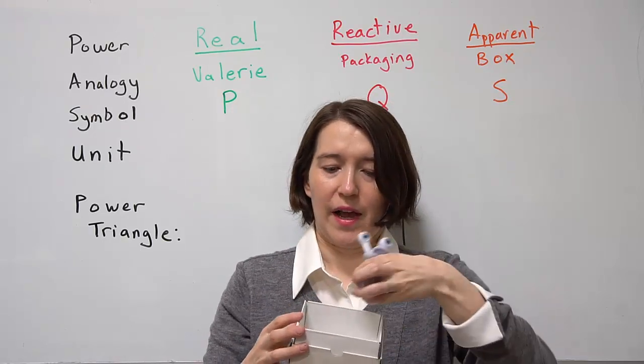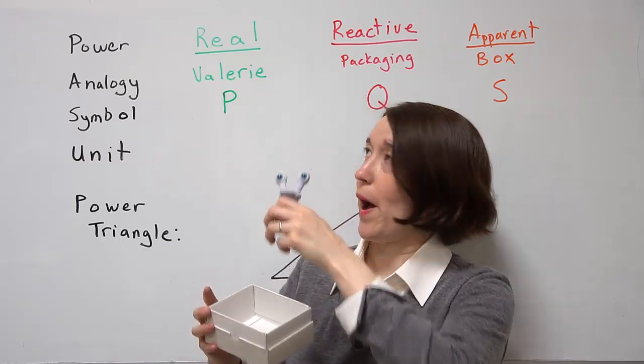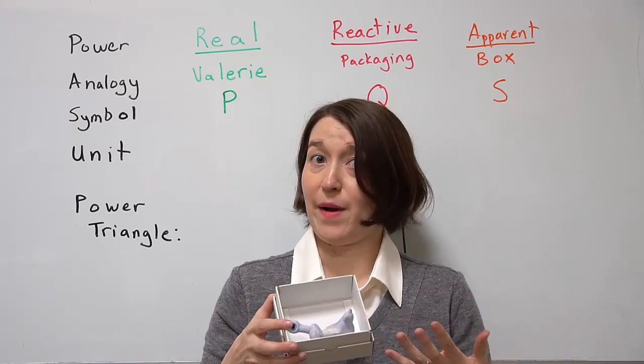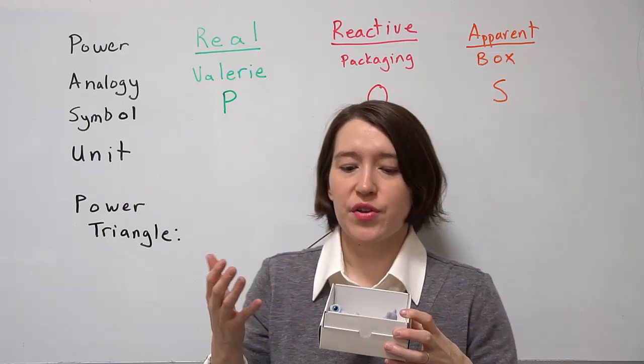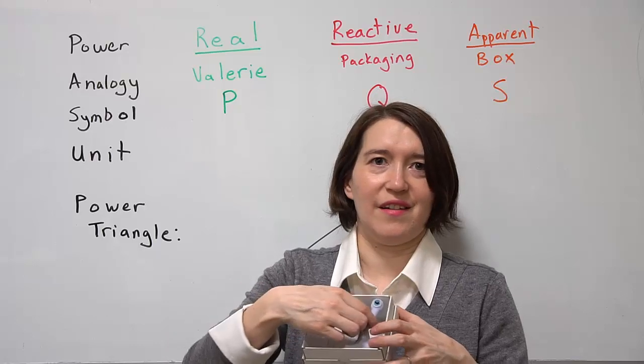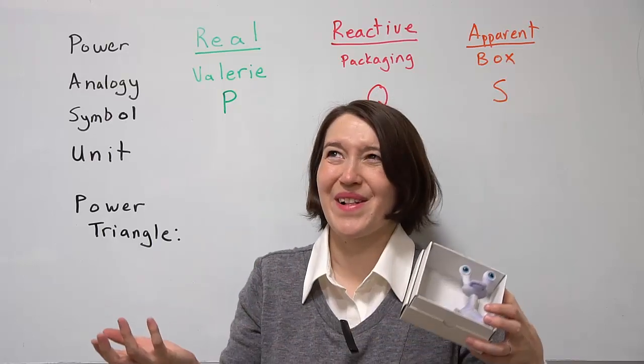I could put Valerie, the thing we want, the real power, into the box which has a potential to send a certain amount of power. But I also have to put something else in here, otherwise she's going to get hurt when she's in the mail.